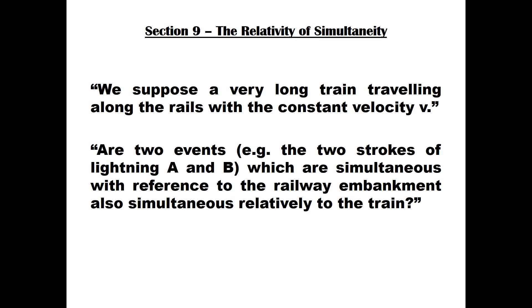The interim conclusion is that when these two coordinate systems are not in motion relative to each other, the observers on each coordinate system agree that the lightning strikes are simultaneous. Having established that, we move to the last stage of the thought experiment. At this stage, the train will be moving along the embankment with a velocity V. Einstein now asks the crucial question: are two events — the two strokes of lightning A and B — which are simultaneous with reference to the railway embankment, also simultaneous relatively to the train?